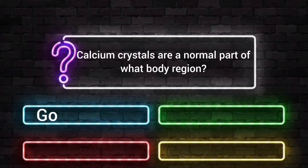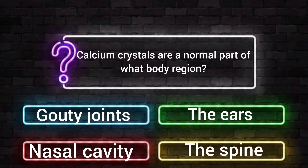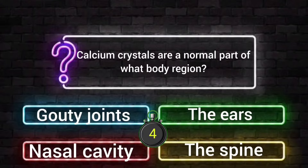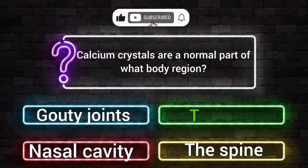Calcium crystals are a normal part of what body region? Option A: jelly joints. Option B: the ears. Option C: muscle cavity. Option D: the spine. Your time starts now. The answer is Option B, the ears.